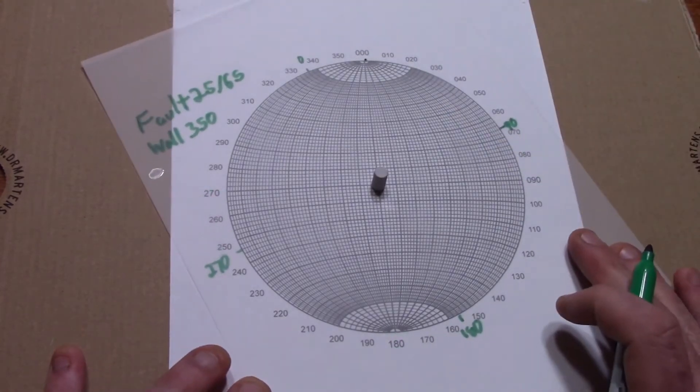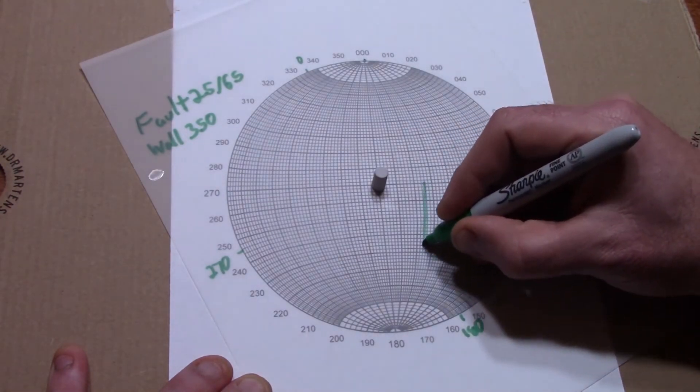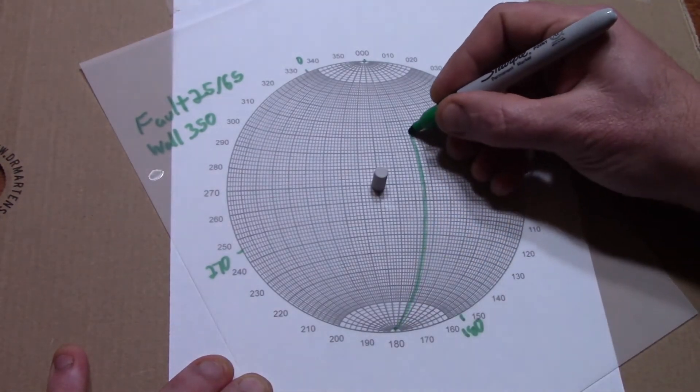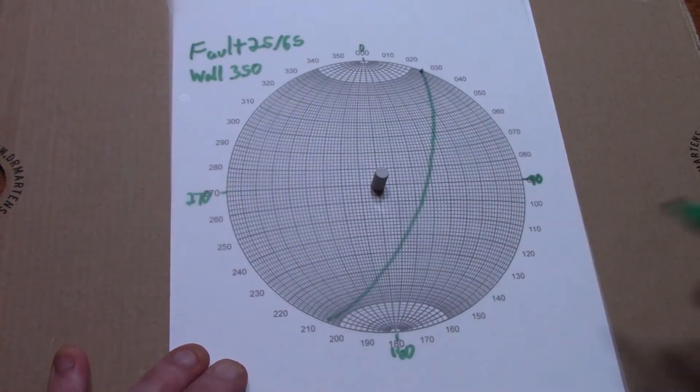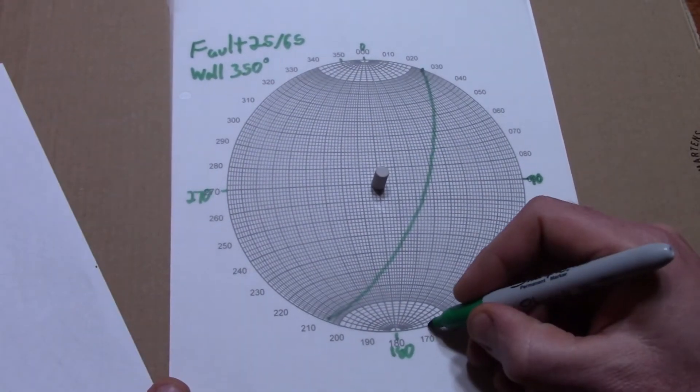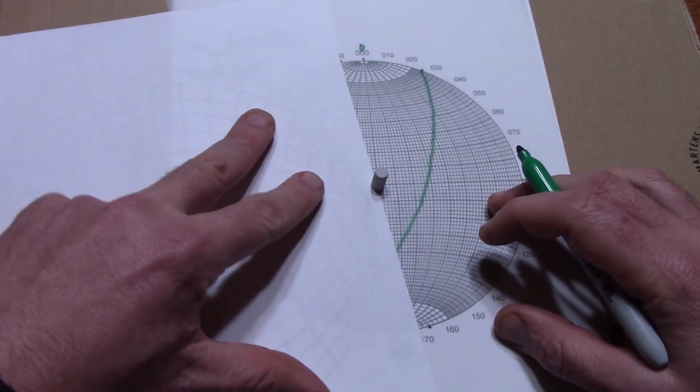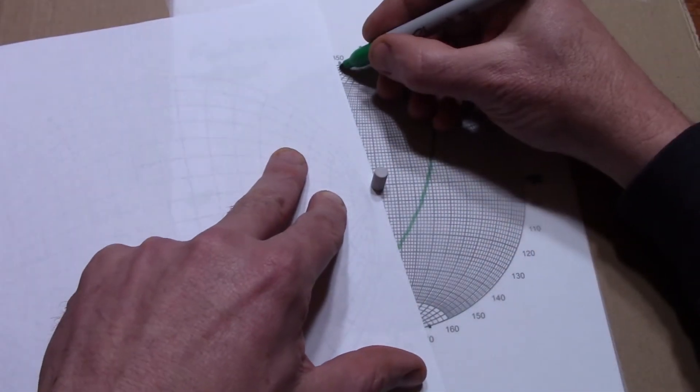First plot the fault plane at 25 degrees strike and 65 degrees dip. Rotate back to proper orientation and find 350, or 170, or both, and connect the dots as this is a vertical wall going straight across the stereo net through the middle.